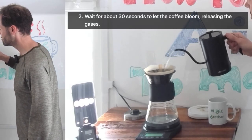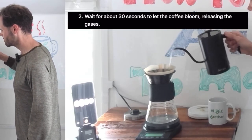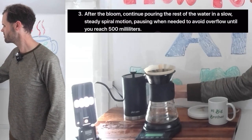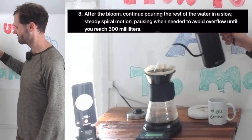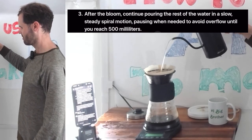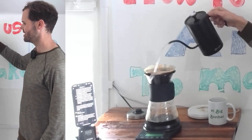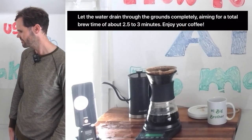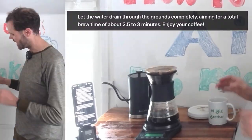Two, wait for about 30 seconds to let the coffee bloom, releasing the gases. Three, after the bloom, continue pouring the rest of the water in a slow, steady spiral motion, pausing when needed to avoid overflow until you reach 500 milliliters. Let the water drain through the grounds completely, aiming for a total brew time of about 2.5 to 3 minutes.